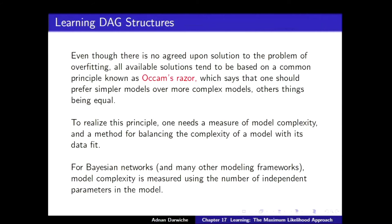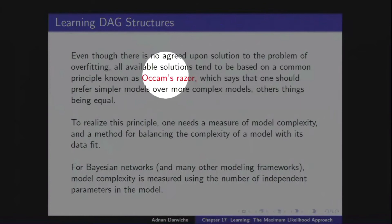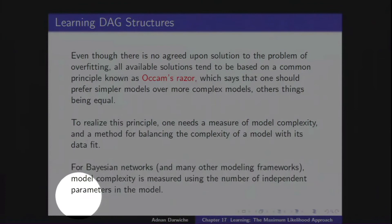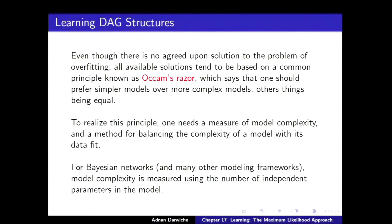If you just optimize log likelihood with no constraint on the Bayesian network structure, you're effectively finding the best possible fit to the data, which is not necessarily good — you fit the data well but cannot generalize. This is a very old problem in science. The general principle known as Occam's razor says one should prefer simpler models over more complex models, other things being equal. To apply this, you need a notion of model complexity, which for Bayesian networks is the number of independent parameters.